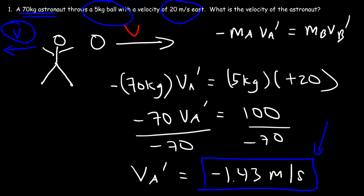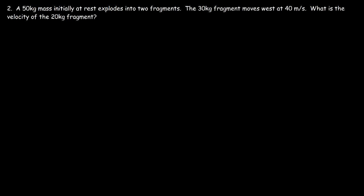Because the astronaut has more mass, he moves backward with a lower speed. The ball has less mass, so it moves to the right with a greater velocity. As mass increases, velocity decreases (assuming constant momentum). If you decrease the mass, the velocity increases. So objects with very large mass tend to move slower, and light objects tend to move faster.